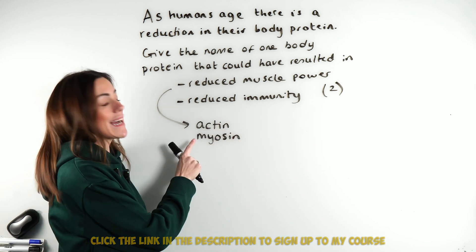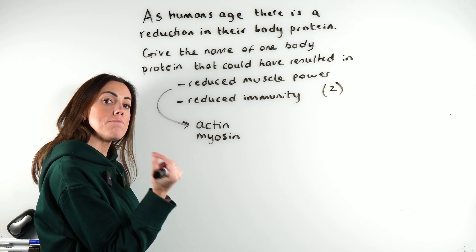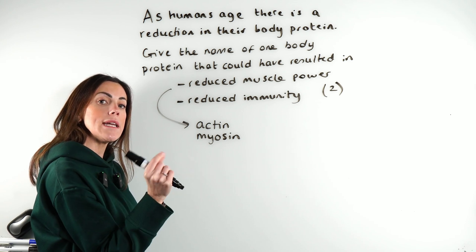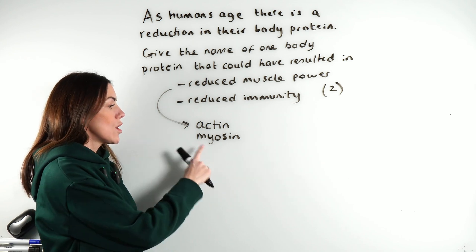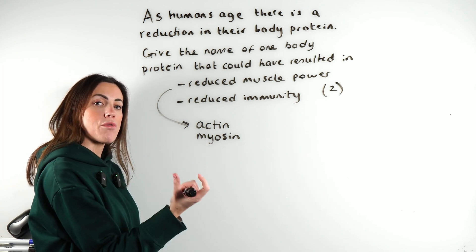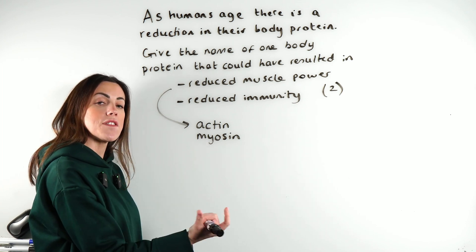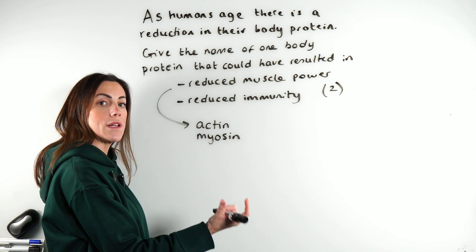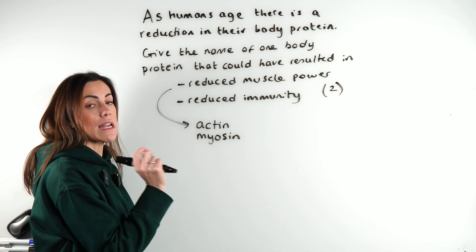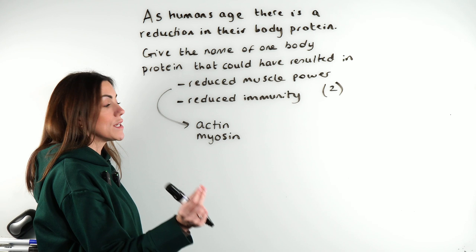Actin is the thinner fibrous protein that makes up a myofibril in a muscle, whereas myosin is the thicker fibrous protein that makes up the rest of the myofibril in a muscle. As well as those two proteins, there are another two proteins that you could name.